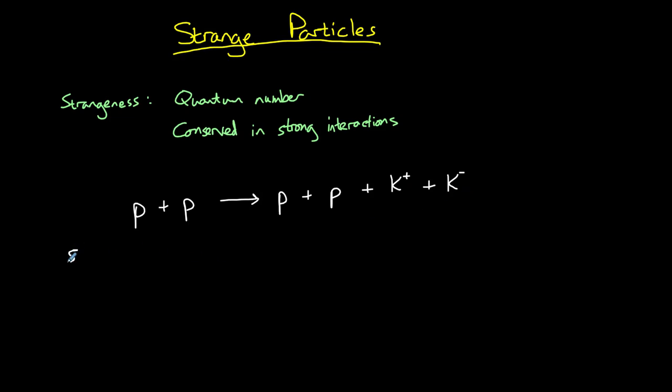So if we check for conservation of strangeness, this is a strong interaction. Protons do not have any strangeness, so these all have a strangeness of zero. A K plus particle has a strangeness of one and a K minus particle has a strangeness of minus one. Therefore, strangeness is conserved.